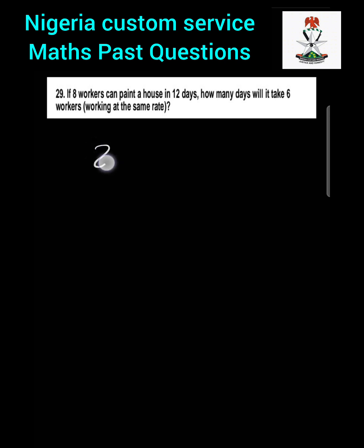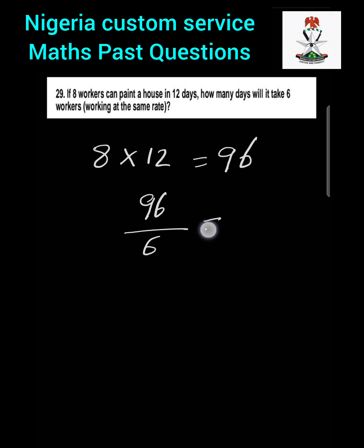Question 29: If 8 workers can paint a house in 12 days, how many days will it take 6 workers working at the same rate? 8 multiplied by 12 gives us 96 man-days. Dividing 96 by 6 gives us 16 days. So it will take 6 workers 16 days to complete the work at the same rate.